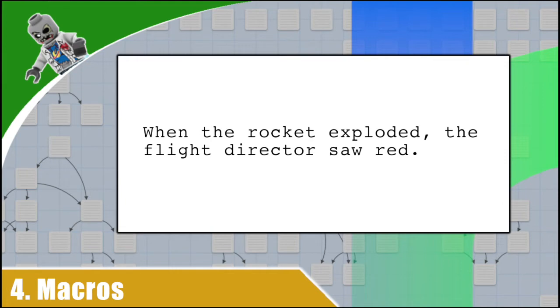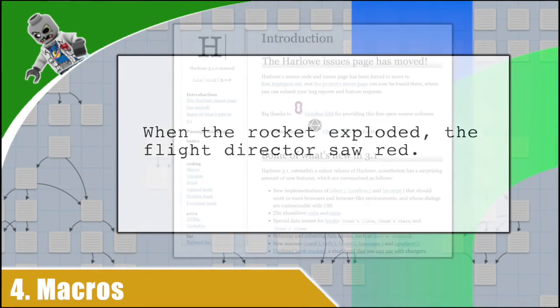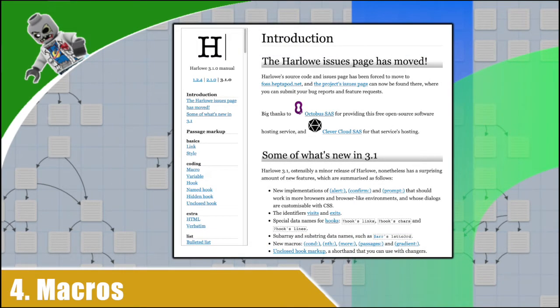Now we're using the Harlowe story format. This is the default story format, and it provides the Harlowe language — a language designed for beginner coders. The syntax is easy to learn, but it provides a lot of tools to create rich and interactive experiences. Meaning the pool starts shallow, but it goes very deep. Harlowe uses what is known as macros. Macros define what we can do with the language. We can't create our own macros, so these macros define the limits of what we can do. But don't worry, we can do a lot because there are a ton of macros.